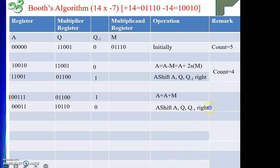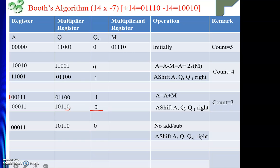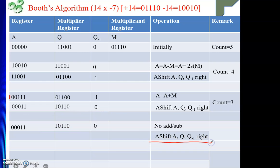Now Q0 = 0 and Q−1 = 0 — consecutive bits are the same — so no addition or subtraction is performed. We simply copy the current values and then perform an arithmetic shift right. A becomes 00001, Q becomes 11001, and the shifted-out 0 is discarded. Decrement count to 2.